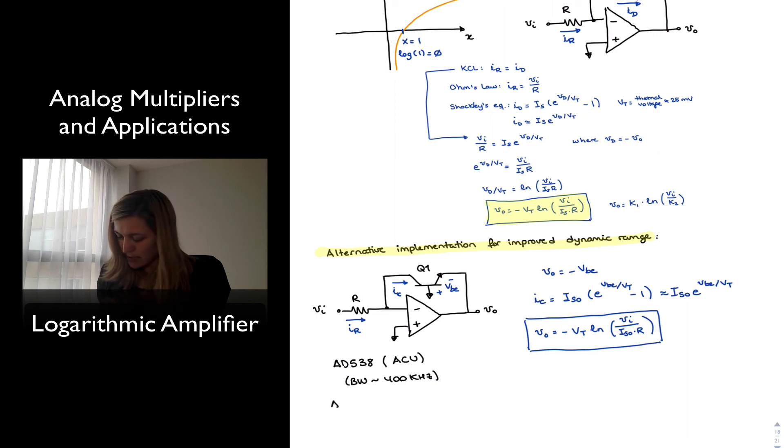If you look at logarithmic amplifiers using different implementations, like the AD641, which is basically a modulating multiplier using a log amp, you will see it can run up to 250 MHz. And it simply uses a different type of logarithmic amplifier, a different architecture, which is known as the successive detection log amp.